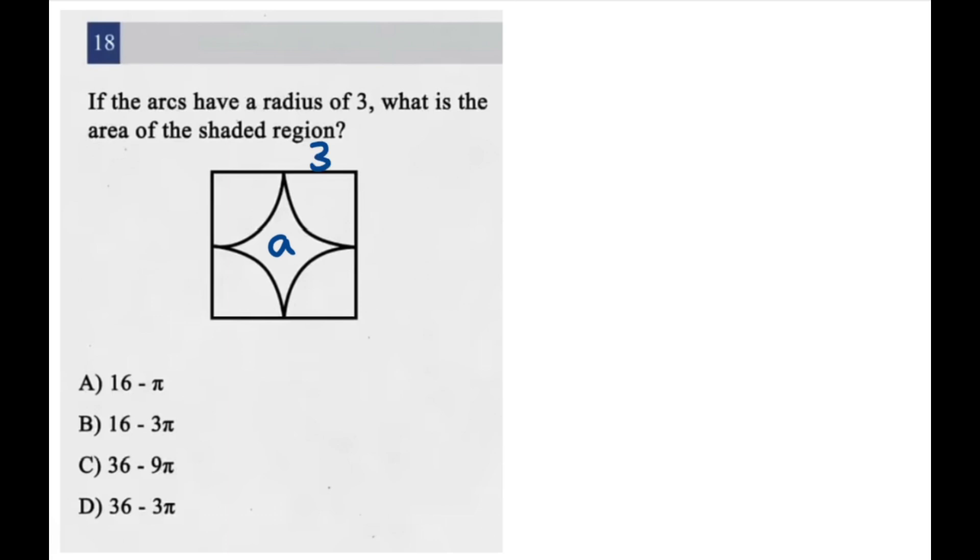Now one edge of the square consists of two of the radiuses. So if they're both going to be 3, then that means the full length of the square is going to be 6.